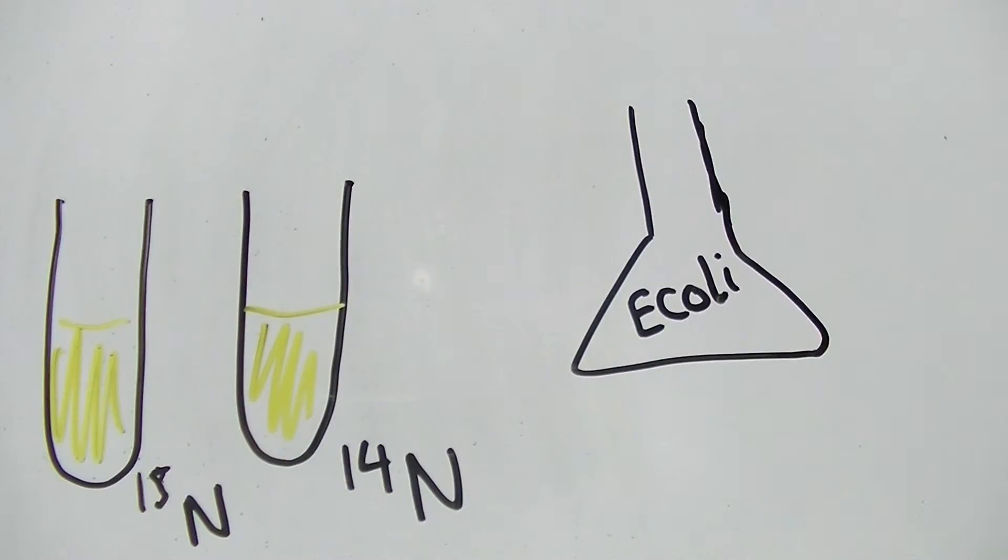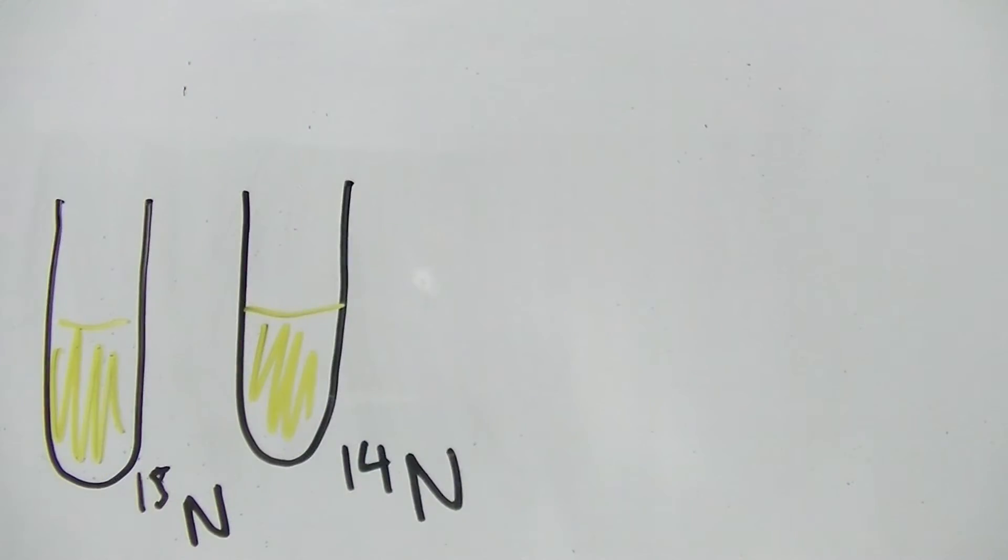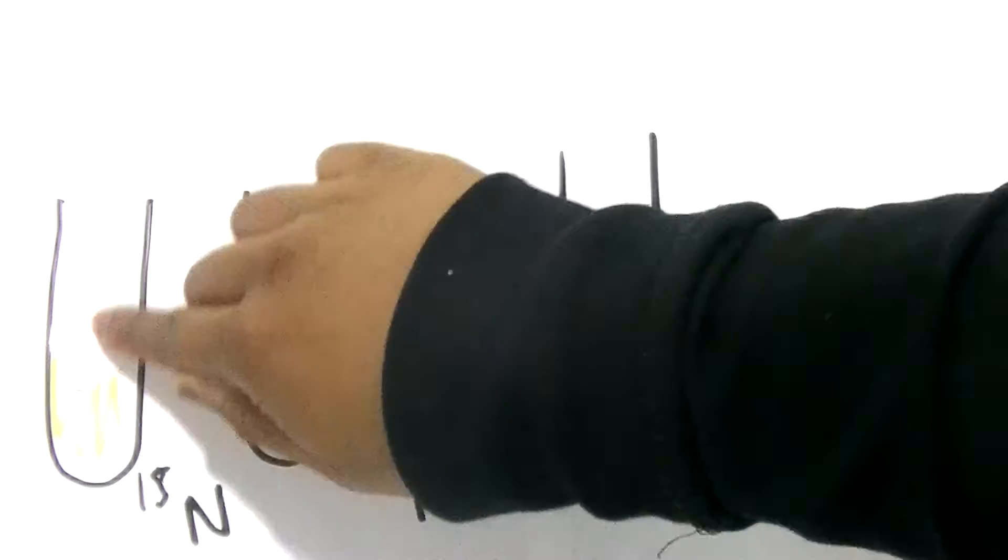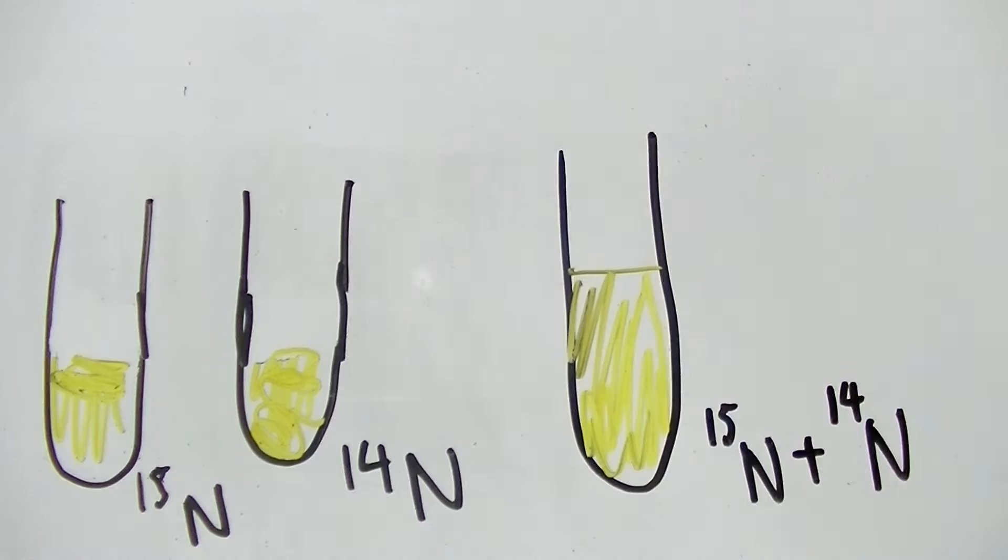Then they took a sample from 15N to keep it for later and took a sample from 14N to keep for later. Then they put the 15N into the 14N and they let that all replicate for one generation.